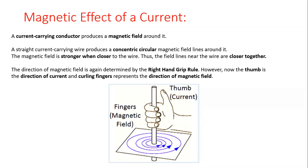In the right hand grip rule, the thumb shows the direction of the current and the curled fingers show the direction of the magnetic field. In the diagram on screen, the electric current through the conductor is upward, so we place the thumb upward — the current is flowing out of the plane. The magnetic field shown by blue circles is in the anticlockwise direction. Remember: when current flows upward or out of the plane, the magnetic field is anticlockwise; when current flows downward into the plane, the magnetic field is clockwise.